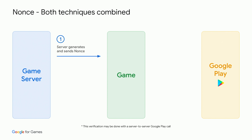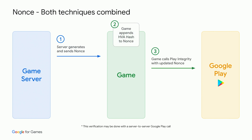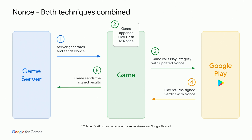The server generates and sends a nonce to the game client. The game appends the hash associated with the high-value action to the nonce, and then sends this combined nonce to Google Play through the Play Integrity API. The signed verdict is returned to the game, which sends the signed result to the game server. The signature is verified by the game server, and the original nonce is separated from the combined nonce and verified. The hashed part of the nonce is then used to verify or perform the action, and then the server responds with client instructions.